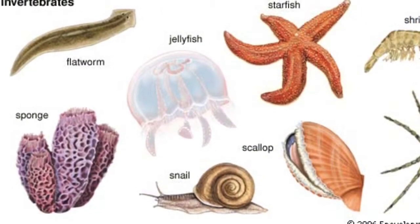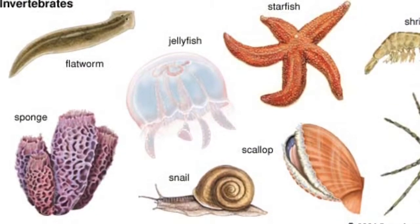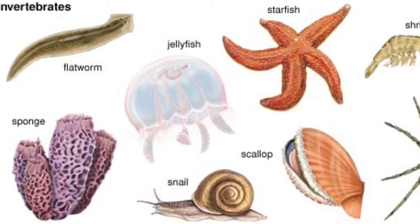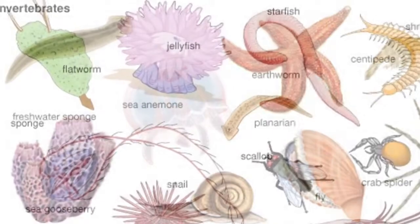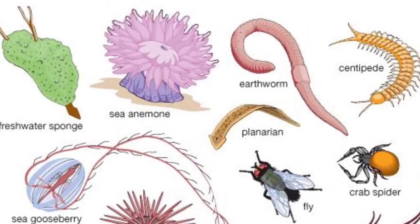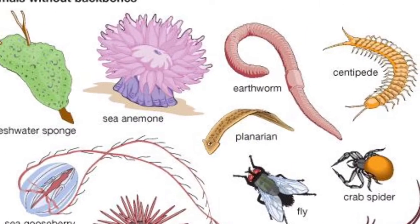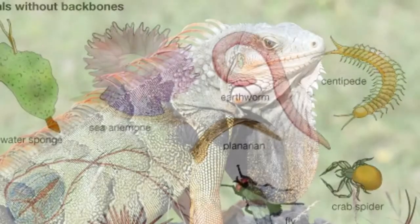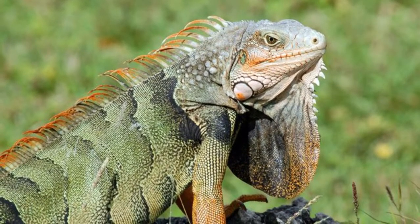Now we are going to talk about invertebrates. Invertebrates are mainly insects that possess no backbone and never grow one. Familiar examples of invertebrates include insects, crabs, lobsters, snails, and clams.